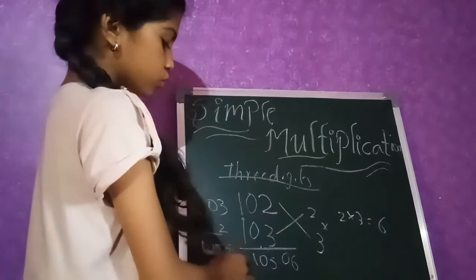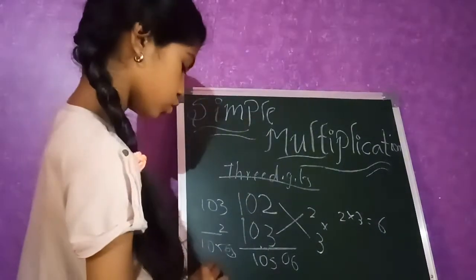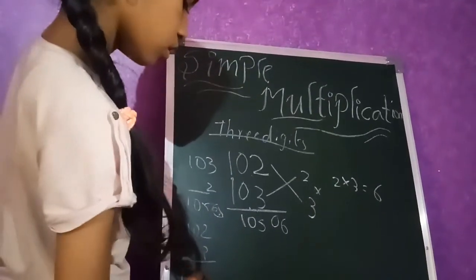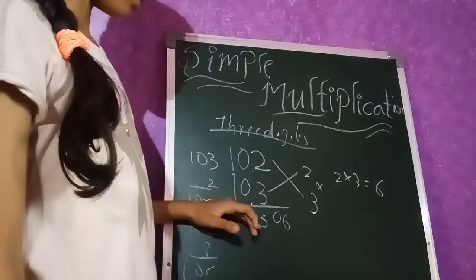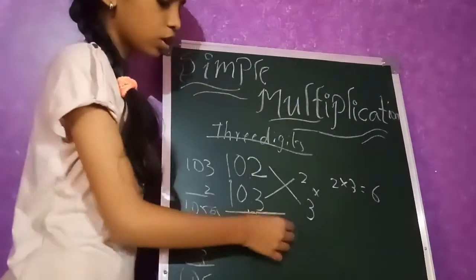If you want to keep in this side, 102 plus 3 equals to 105. Anyway, same is coming. That's why we are keeping 105, 0, 6.